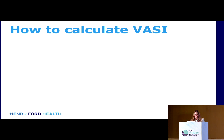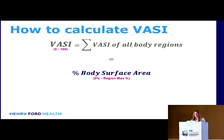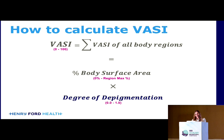To fully understand this presentation, you must know how to calculate the VASI yourself. It's quite simple once you break it down. The VASI ranges from 0 to 100, and it is the sum of all body region VASIs — that is, the percent body surface area ranging from 0 to the maximum of the body region, times the degree of depigmentation, which ranges from 0.0 to 1.0.